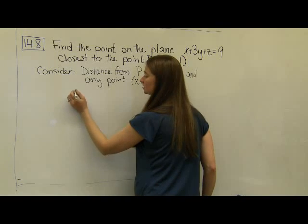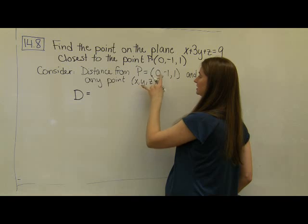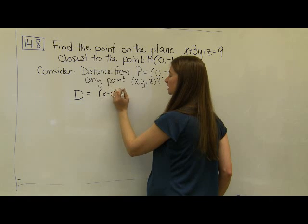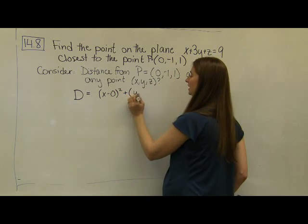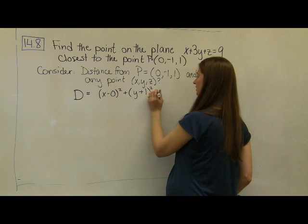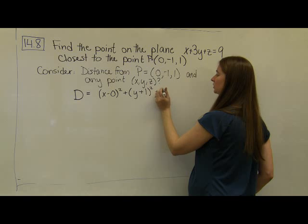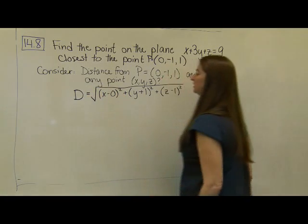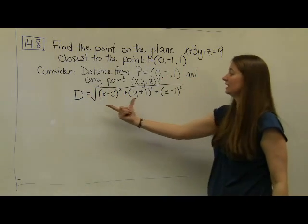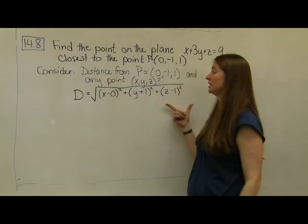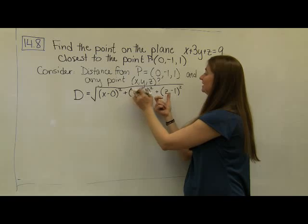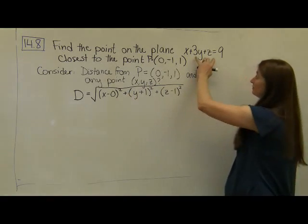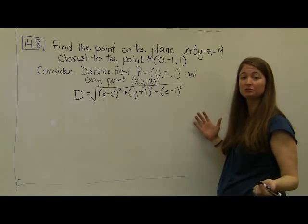We're going to use our distance equation — it's just the Pythagorean theorem. It's the difference in x values squared, (x minus 0) squared, plus the difference in y values squared, (y minus negative 1) squared, plus the difference in z values squared, (z minus 1) squared, all square rooted. I want to minimize this distance function subject to the constraint that the point x, y, z lives on the plane.